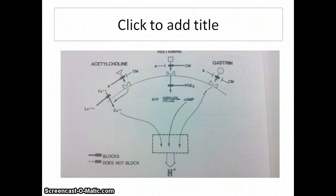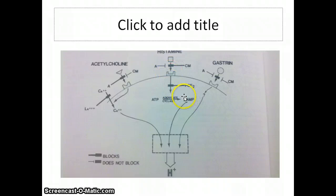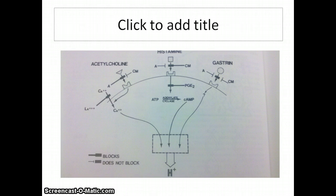Acetylcholine and gastrin binding is dependent on calcium entry into the cell. Histamine binding, however, is not. When histamine binds to its receptor H2, cyclic AMP levels rise in the cell. Cyclic AMP then activates protein kinase A, which increases transcription factors of cytoskeletal proteins. The cytoskeletal proteins transport hydrogen-potassium ATPase to the cellular surface, which stimulates increased production of protons. By inhibiting histamine, fewer hydrogen-potassium ATPases are located on the cellular surface, resulting in less proton production.